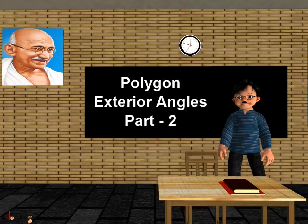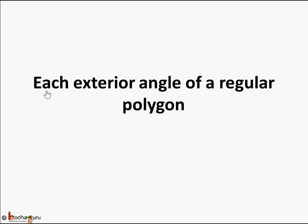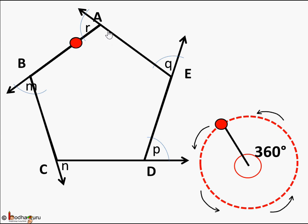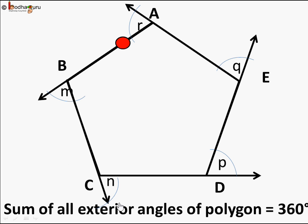Hello children. In the last lesson we learned what is the sum of exterior angles of a polygon. In this lesson we are going to learn how to find the value of each exterior angle of a regular polygon. Let's revise quickly — here is a pentagon, and we found the sum of all exterior angles by walking around the boundary, like walking on a circular path. The sum of all exterior angles is 360 degrees, and this holds for any polygon.